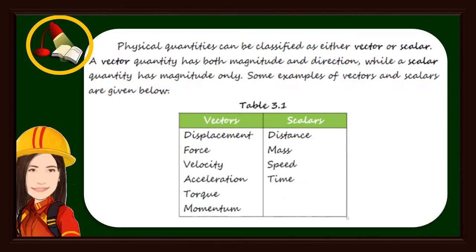Physical quantities can be classified as either vector or scalar. A vector quantity has both magnitude and direction, while a scalar quantity has magnitude only. Some examples of vectors and scalars are given below.